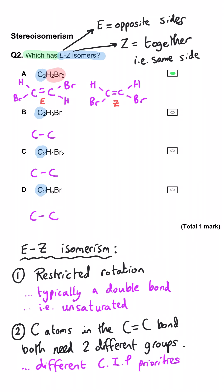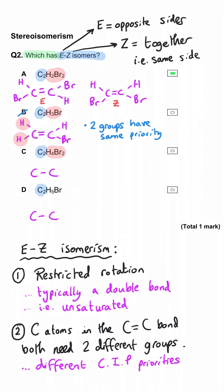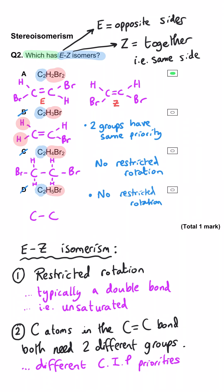Checking the other options: B is also unsaturated and has a double bond, but three of the four attached atoms are hydrogens, meaning one double bond carbon will have two hydrogens — same priority — so B will not display EZ isomerism. C is not even unsaturated; it has a saturated carbon skeleton, so there's no double bond and no restricted rotation. D is also saturated — it's just bromoethane — and will not have EZ isomerism. So A is correct.